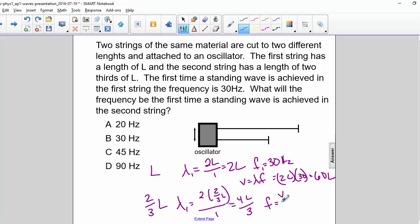frequency equals V over lambda, so 60L divided by four-thirds L equals 45 Hz. So the correct answer is C.